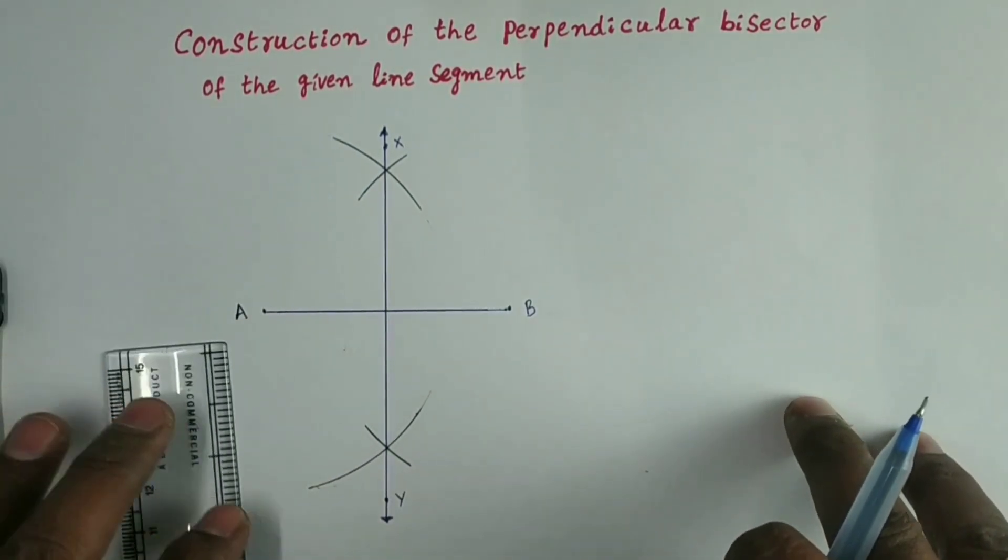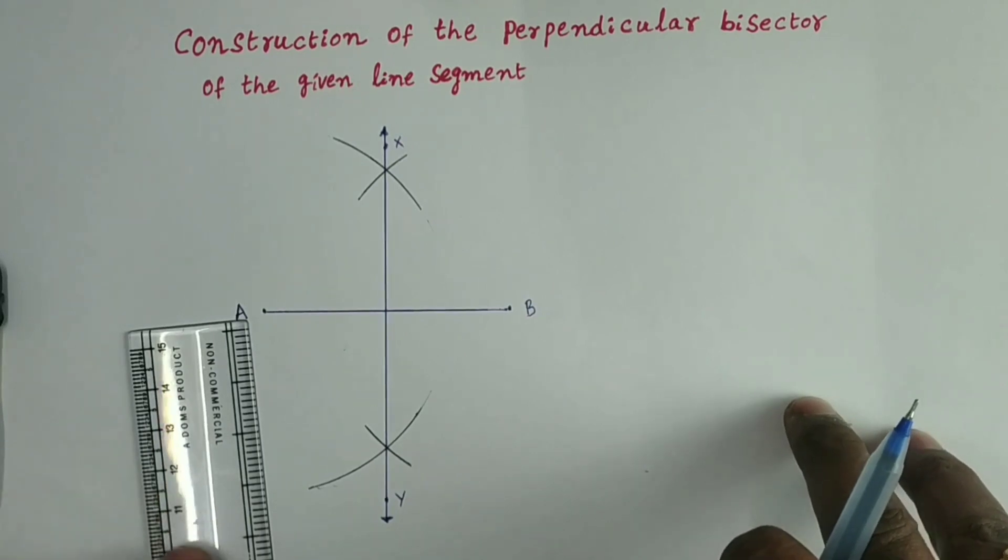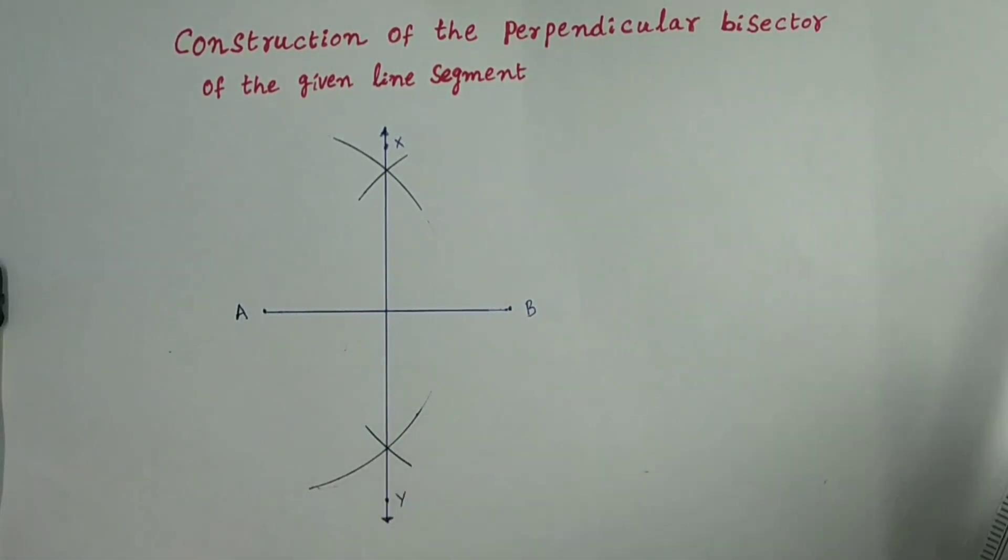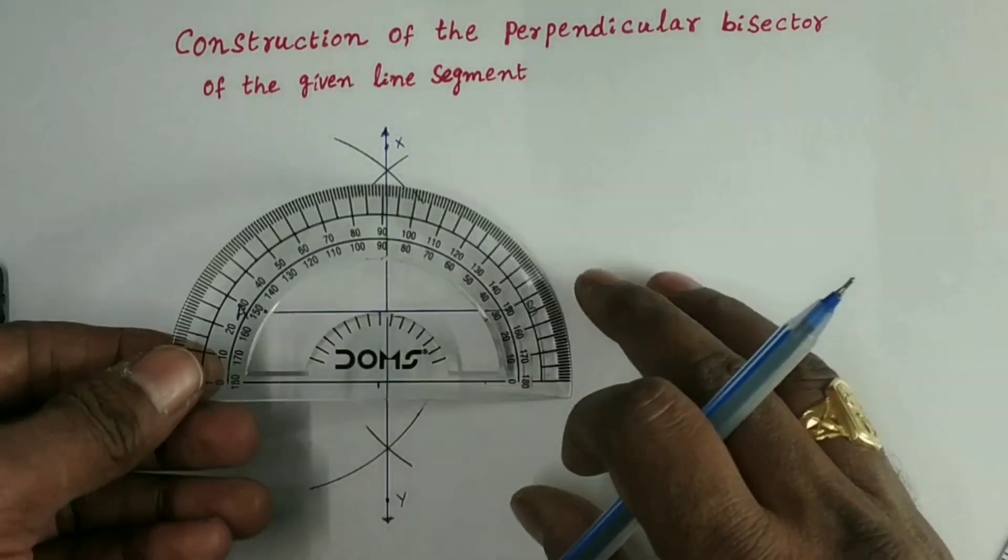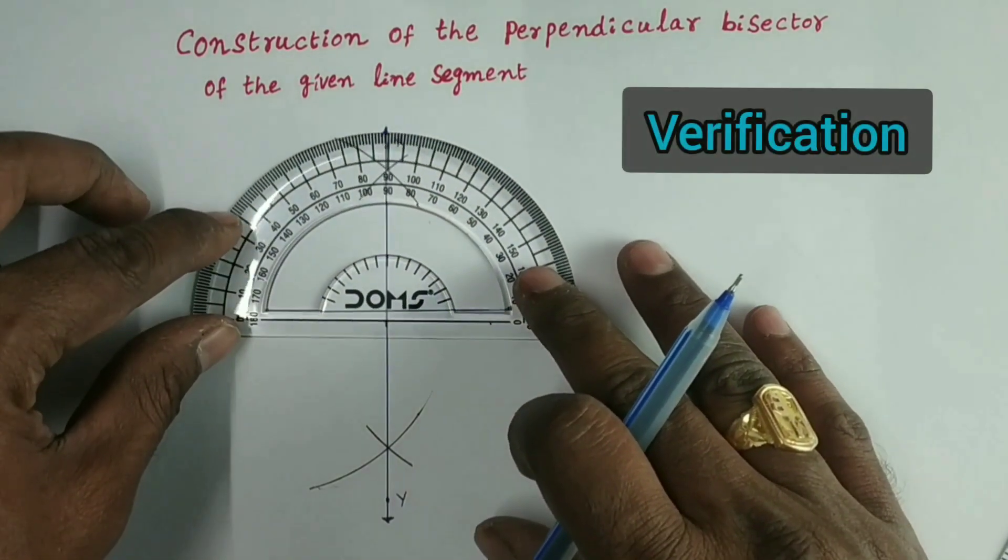Now, the line XY is called the perpendicular bisector of a given line segment AB. Let us go to verify the construction.